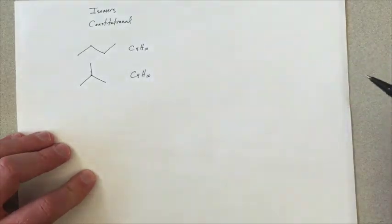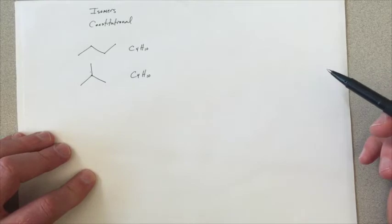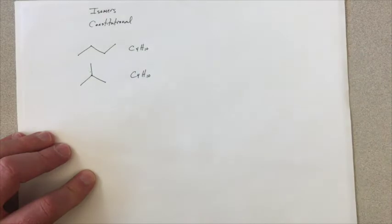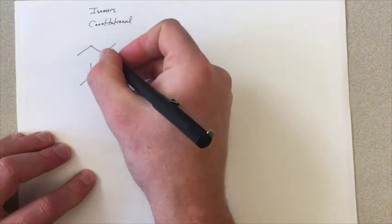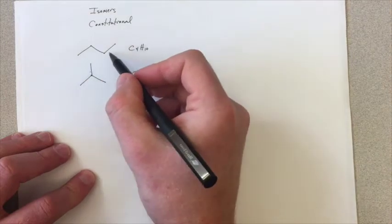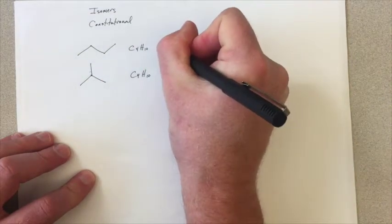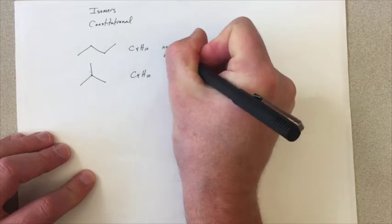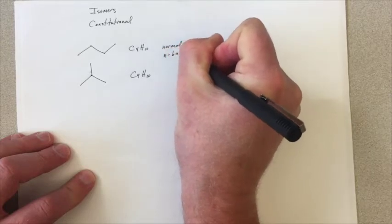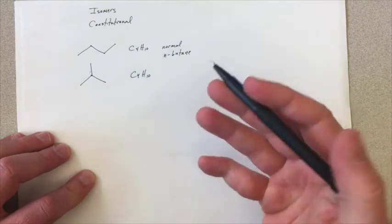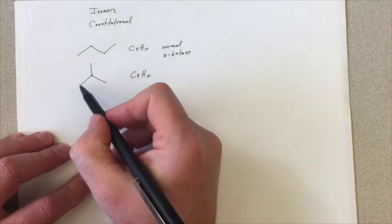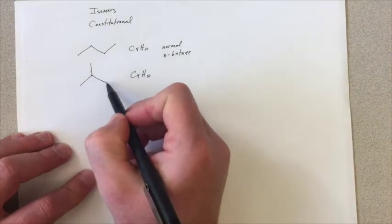Now, constitutional isomers might have different properties associated with them, and we definitely name them differently because the different properties might be useful to us. So this is the most common way of drawing butane, and we call that the normal or n-butane, where it's just linear. If you have a branch in the middle, we have to name that differently.